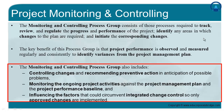Together, these baselines form the project performance baseline, which is used for tracking the performance of the project — whether it is going to deliver the complete scope on time and within the budget. In the monitoring and controlling process group, you monitor ongoing project activities against the project management plan and the project performance baseline. You also influence the factors that could circumvent integrated change control, ensuring only approved changes are implemented. This integrated change control process is one of the important processes in monitoring and controlling.